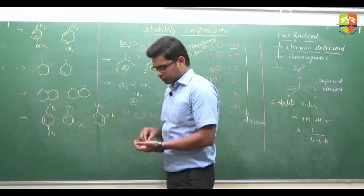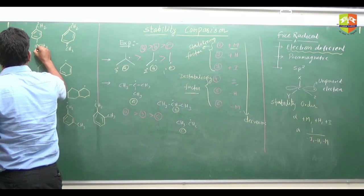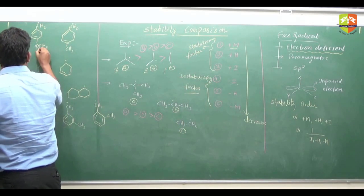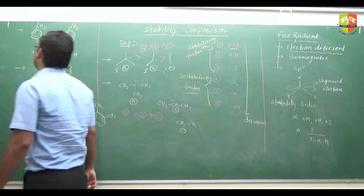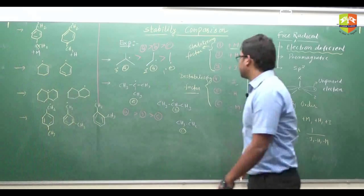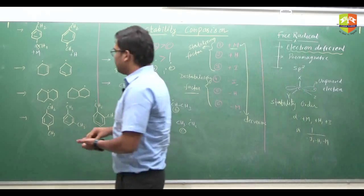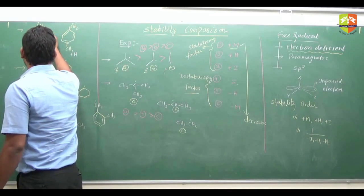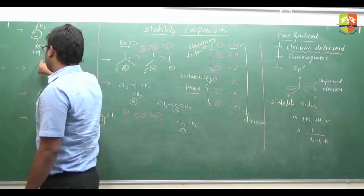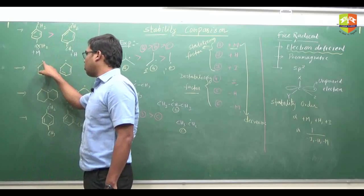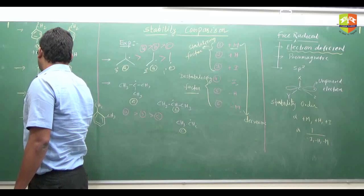Looking at these examples: the oxygen has two lone pairs and it shows +M effect, while the other shows +H (hyperconjugation). Both +M and +H are stabilizing factors, but +M dominates over +H. So obviously the first one is more stable than the second one. The carbon radical is involved in resonance in both molecules.